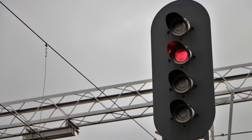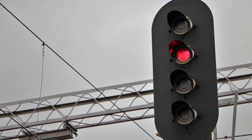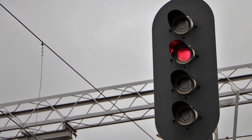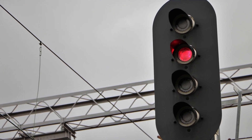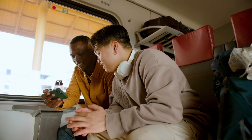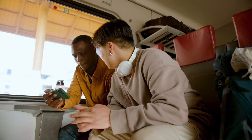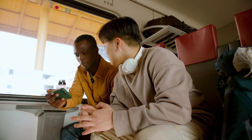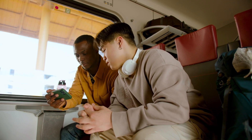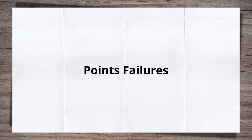The signalling system goes into a failed state for a range of issues, from the seemingly small to issues covering large areas. But for all these issues, passenger safety is the first priority. So what are the common issues that cause the signalling system to fail? Let's take a look. First up, we have points failures.